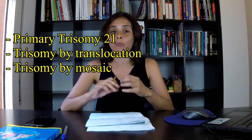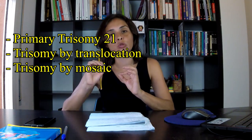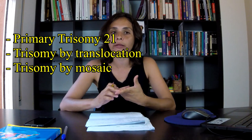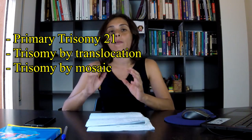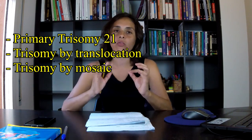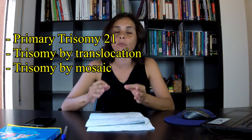This chromosomal alteration has three variants. The first one is primary trisomy 21. The second one is trisomy by translocation and the third one is trisomy by mosaic.